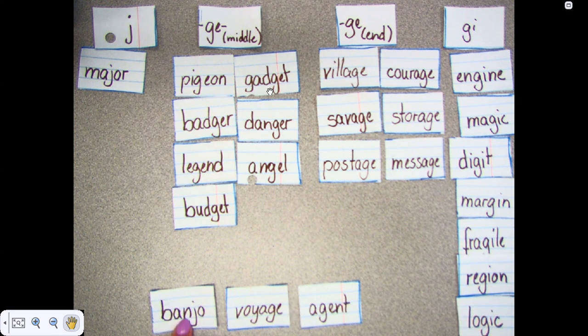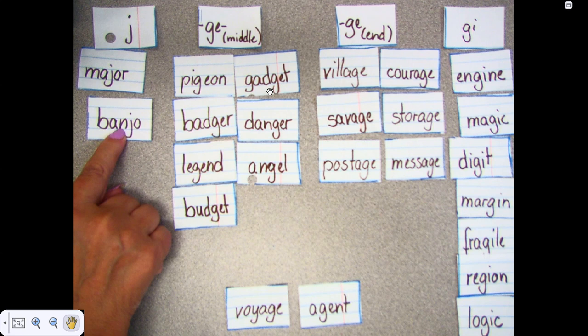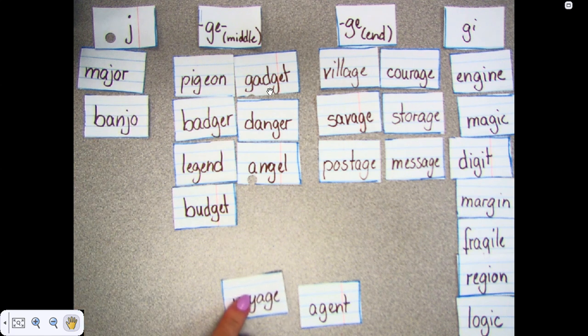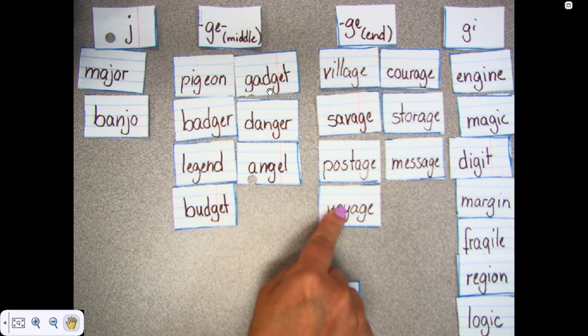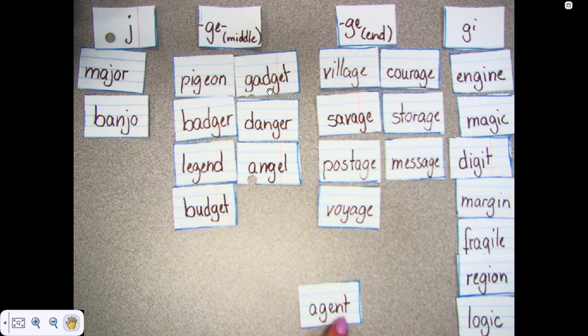All right. Then I have Banjo. There's a J. Banjo. And I have Voyage. It's at the N, so it goes over here.